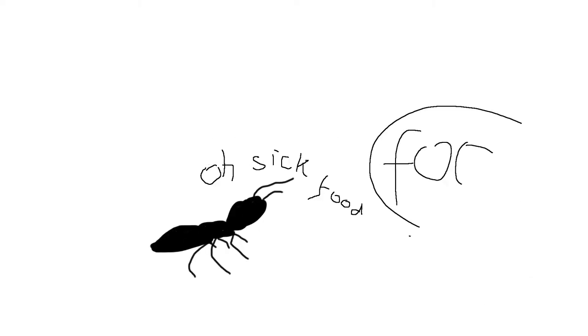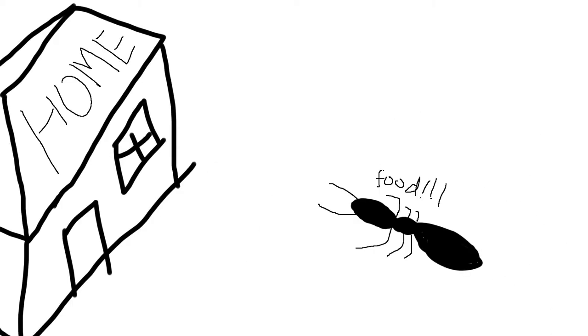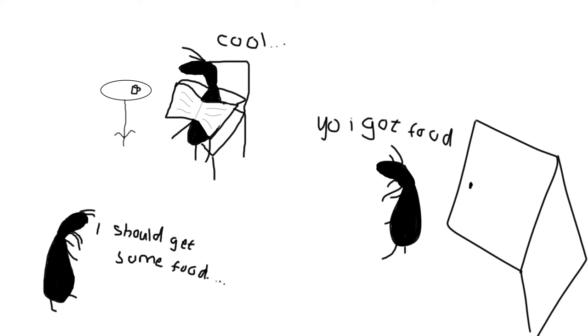In no recruitment, workers leave the nest, search for food, and return alone. No information about the location of resources is communicated. Although, the return of successful workers may stimulate other foragers to leave the nest. This kind of foraging is called solitary foraging.